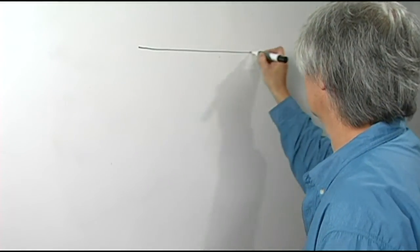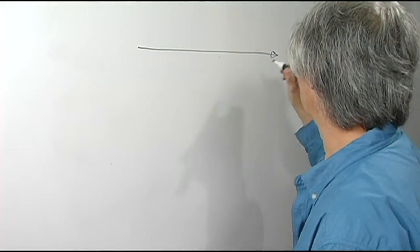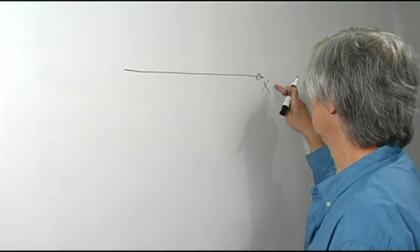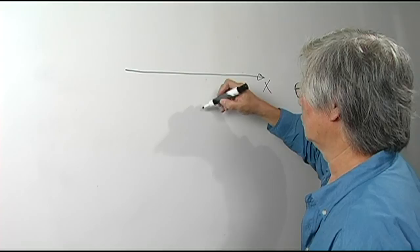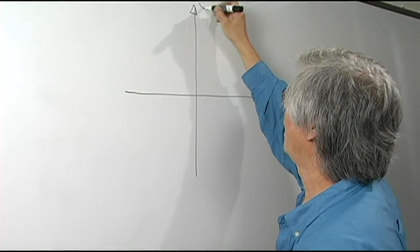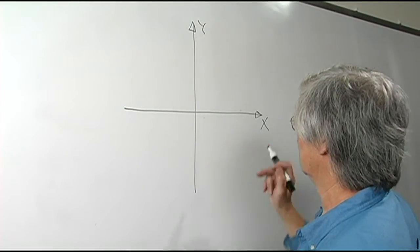Next we're going to talk about axes. We have a horizontal axis that we call X and a vertical axis we call Y. These are two axes.